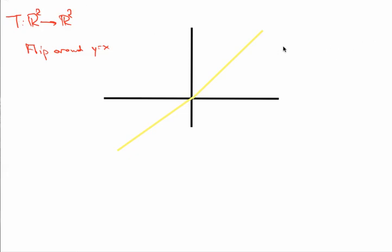So I'm interested in finding out the eigenvalues and eigenvectors of this matrix. So you may be able to guess what the eigenvectors are already. If I'm going to flip around this y equals x line here, anything that's on that line to begin with is going to stay fixed.